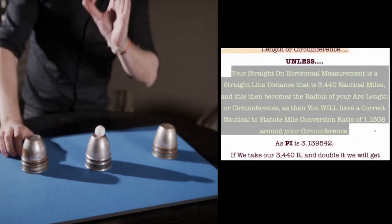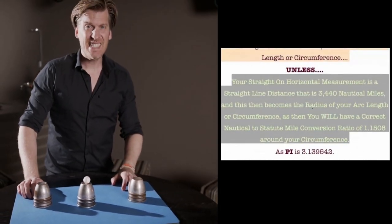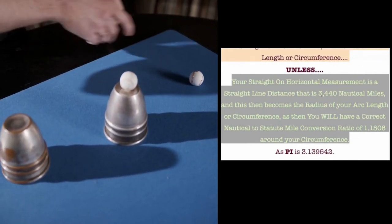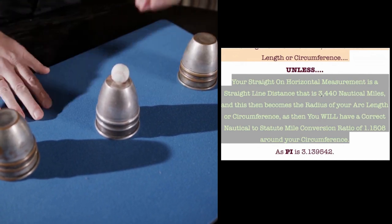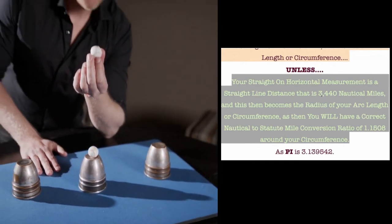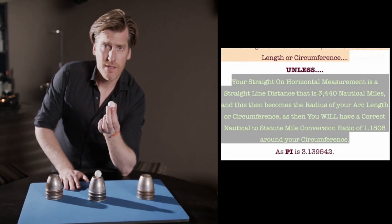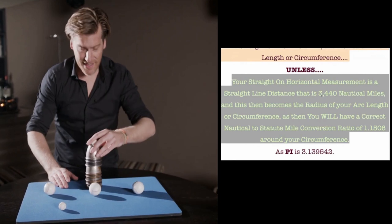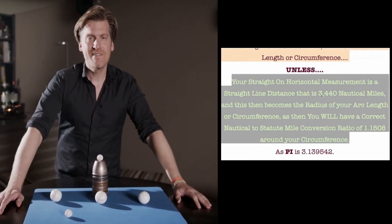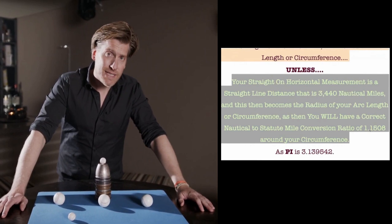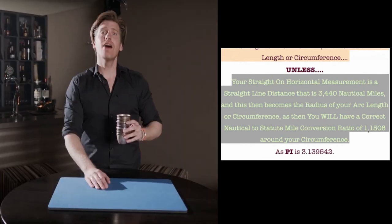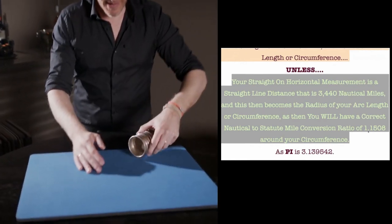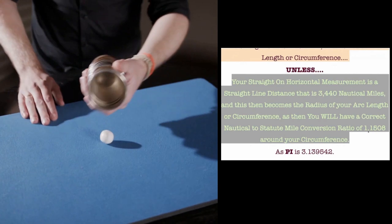So the point I'm making before I go on is that the only way you can have a correct measurement with a section that is 3440 minutes of degree or nautical miles, then it will convert to statute miles. The radius and the circumference will both convert correctly at the ratio of 1.1508. But that is the only real world example of where it actually happens. That would be the only way it can happen. There is no other way it can happen.